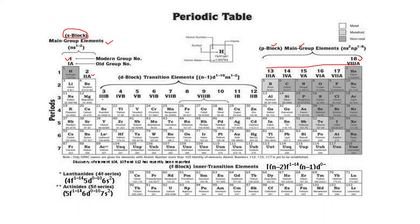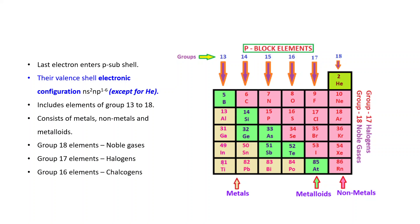S-block and P-block elements are commonly known as main group elements or representative elements. In between, from group 3 to 12, these are known as D-block elements or transition elements. Below the main table there are two rows known as lanthanoids and actinoids, which are F-block elements or inner transition elements.